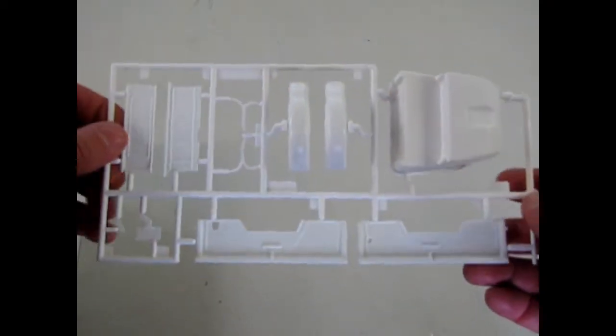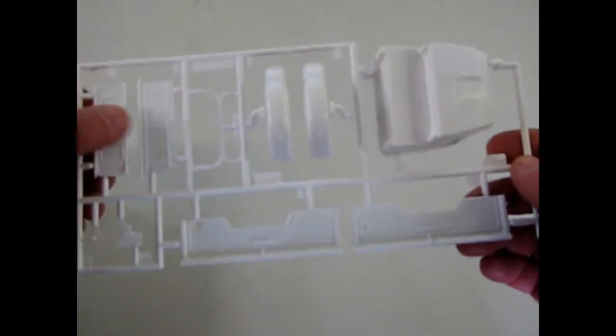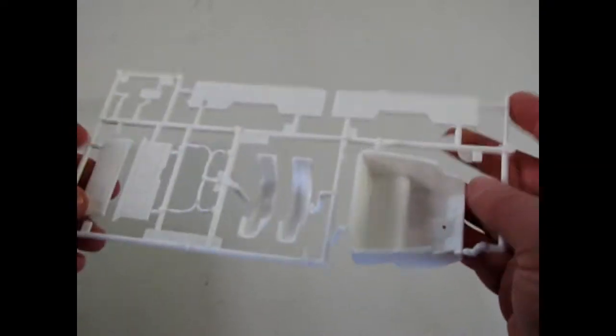And then here is the pickup bed part tree with the full down doors and the pickup body backs.